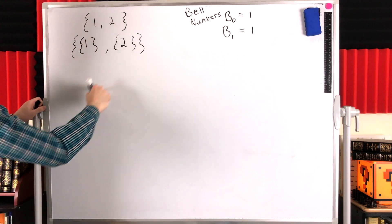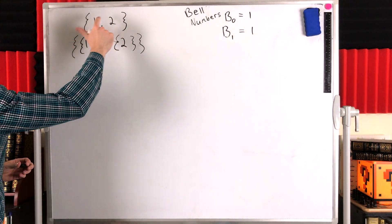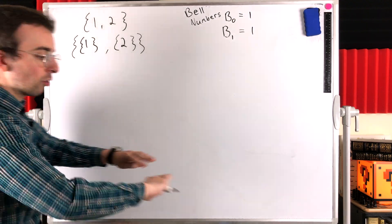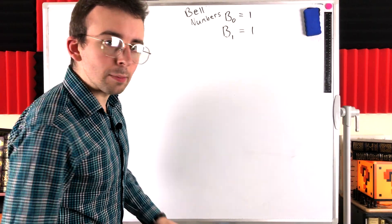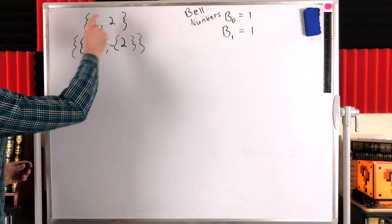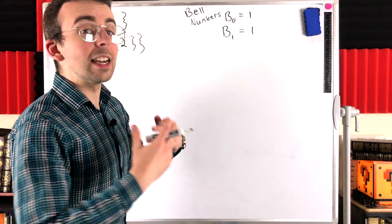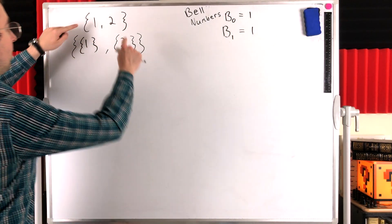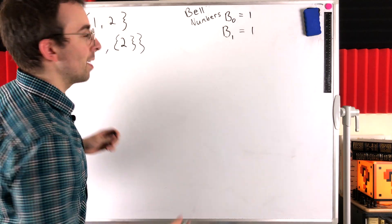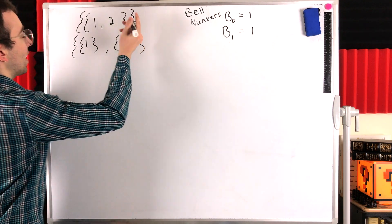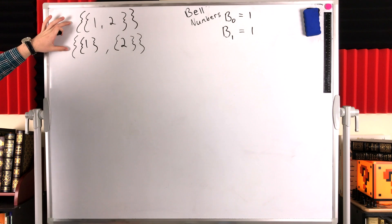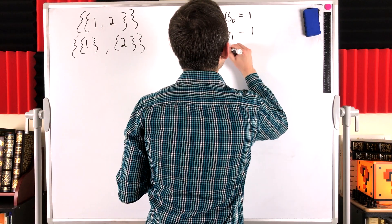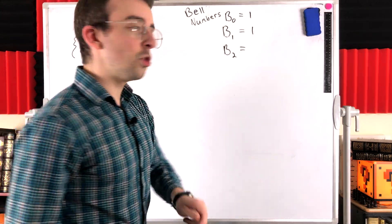The collection of those two sets is the partition — it shows how we've sorted the elements into disjoint subsets. The important part is that the parts must be disjoint, having no elements in common, and if we union them together they must produce the original set, so all elements are accounted for in exactly one part. The only other way to partition this set is putting both elements in the same set. So the Bell number b2 — the number of partitions of a set containing two elements — is equal to two.